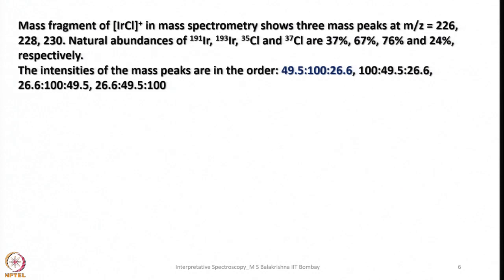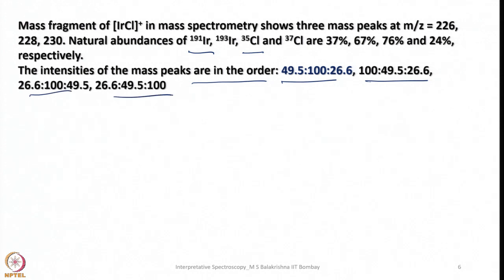This is very simple. Now let us look into another, slightly more complicated problem. Mass fragments of the IrCl cation in mass spectrometry show 3 mass peaks at m/z 226, 228, and 230. The natural abundance of iridium and chlorine are given: 191Ir is 37%, 193Ir is 67%, and 35Cl and 37Cl abundance are 76% and 24% respectively. We have to identify the correct intensity ratio of these peaks appearing at 226, 228, and 230.